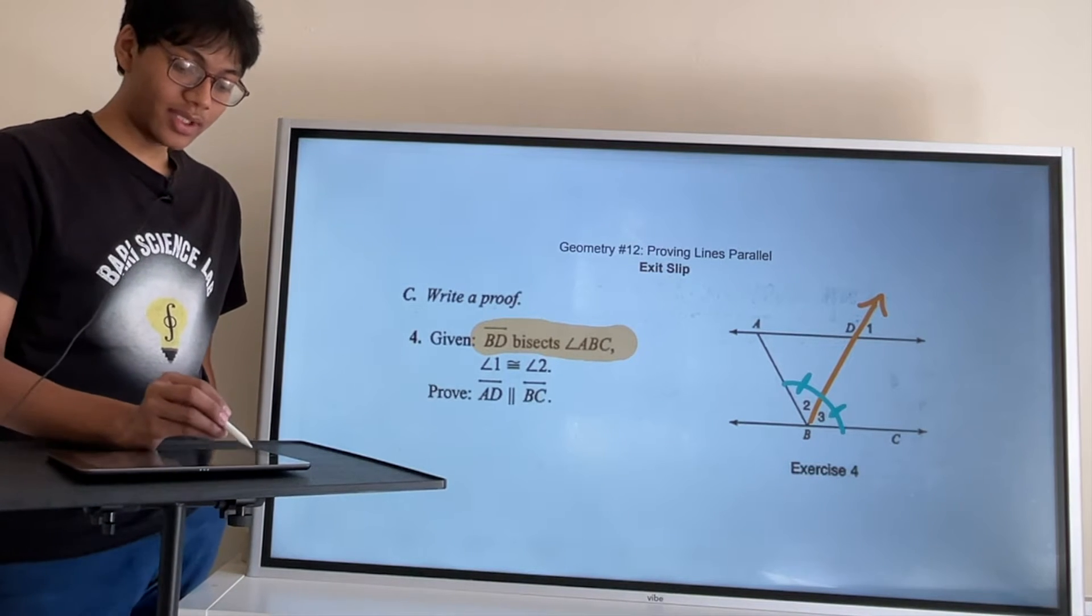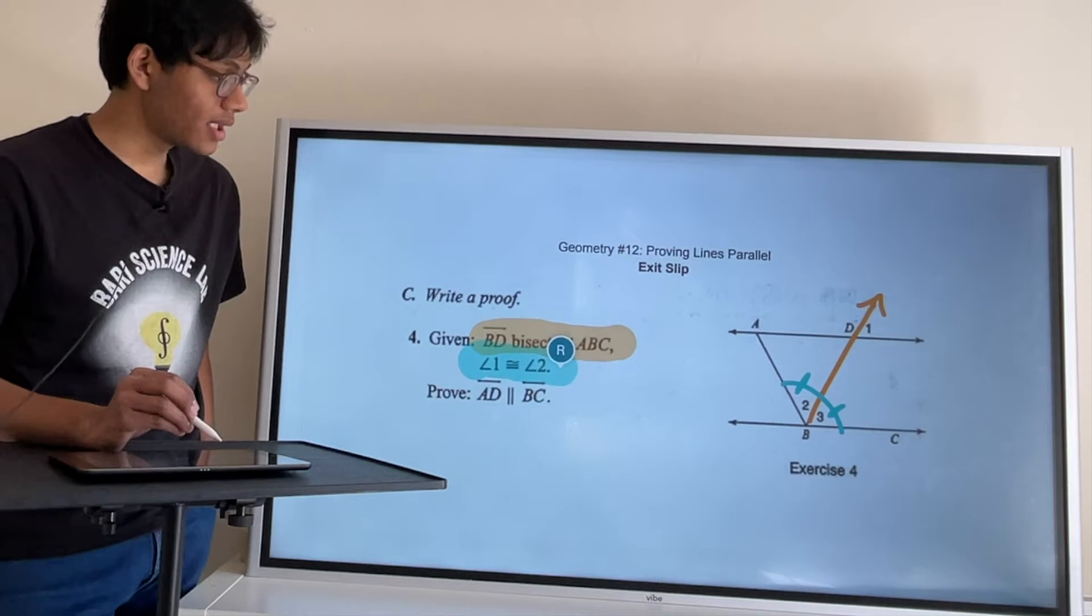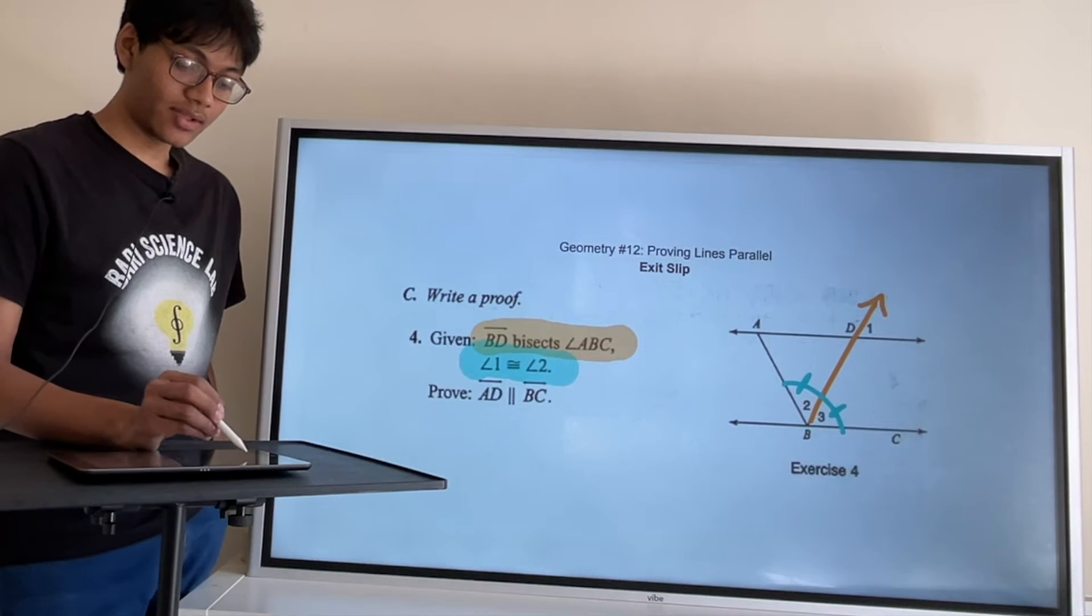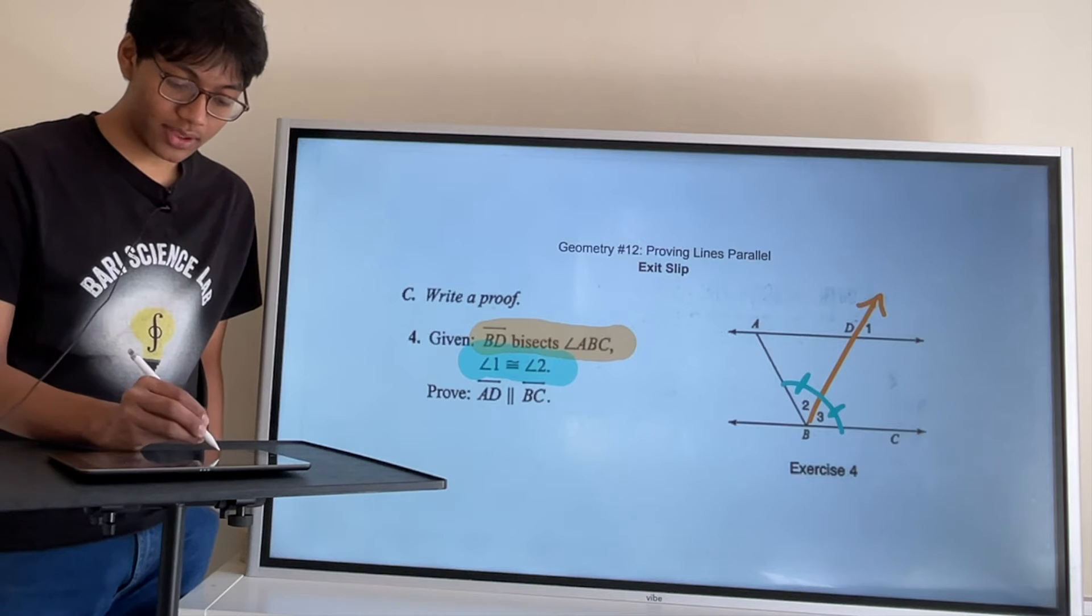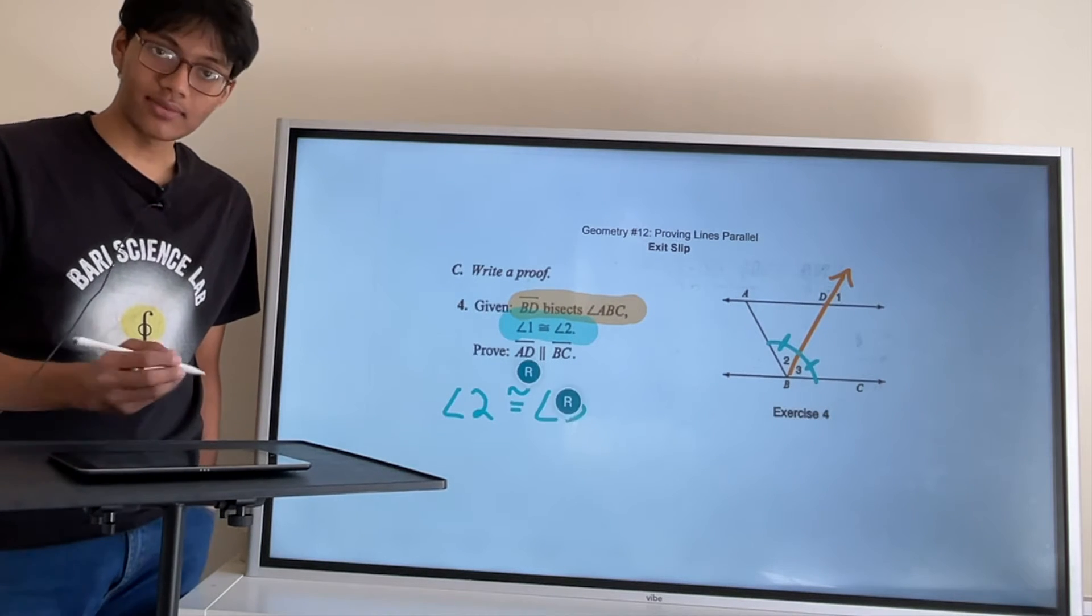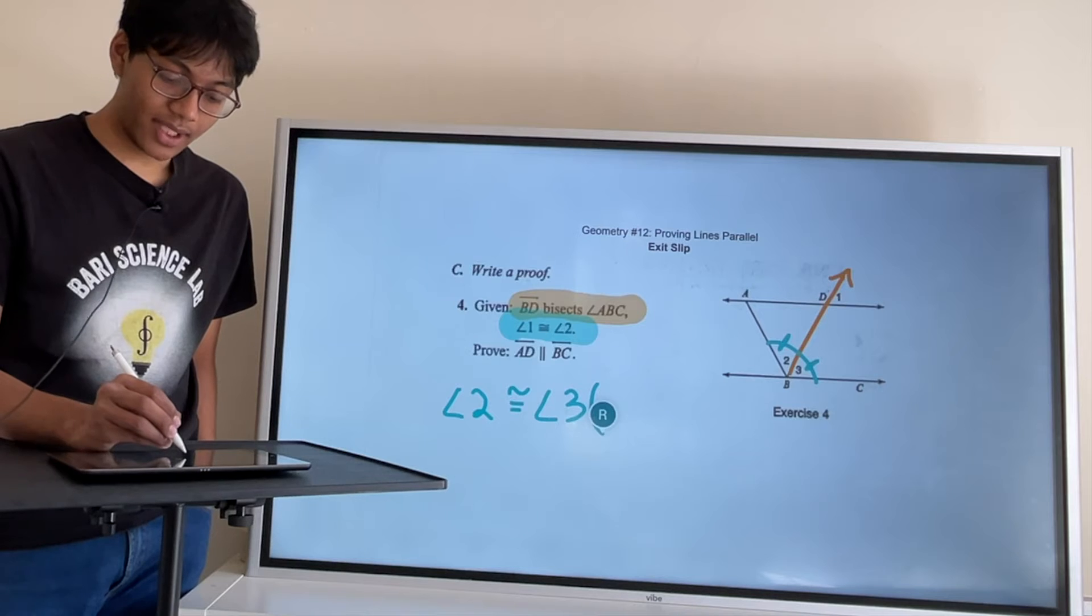Okay, we have one other piece of information. We're told that angle 1 is congruent to angle 2. All right, so how does that help? Well, if angle 1 is congruent to angle 2, we know that angle 2 is also congruent to angle 3, right? Because that's the definition of an angle bisector.